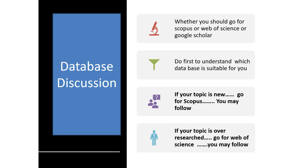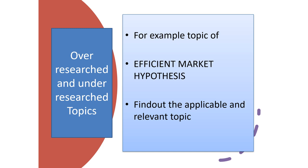This is a database discussion — whether you should go for Scopus, Web of Science, or Google Scholar. You should first understand which database is suitable for you. You have three databases available: Scopus, Web of Science, and Google Scholar. A general principle is: if the topic is new, go for Scopus; if your topic is over-researched, go for Web of Science. If your topic is over-researched — meaning a lot of papers have been conducted — go for Web of Science. The identification of over-researched versus under-researched topics is very important for citation analysis.